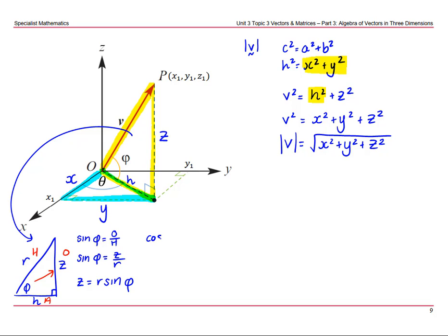Similarly, same triangle, if we looked at cos of phi, it's going to be adjacent over hypotenuse. Cos of phi is going to be h over r. So I can now write h is equal to r cos of phi.